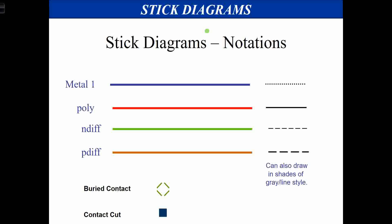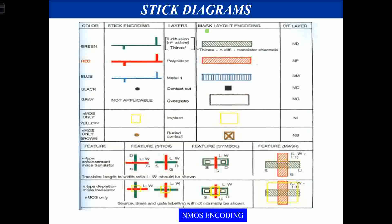Different layers are represented using color codes. Metal is represented with blue, polysilicon with red, N diffusion with green, and P diffusion with brown. For NMOS encoding: N diffusion is green, polysilicon is red, metal is blue, contact cut is a black circle, and there is an implant used to represent a depletion mode transistor, and a buried contact shown in brown.